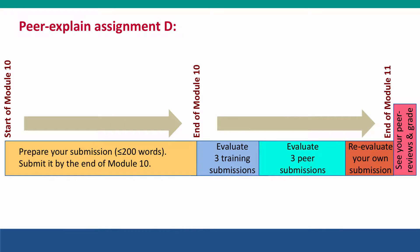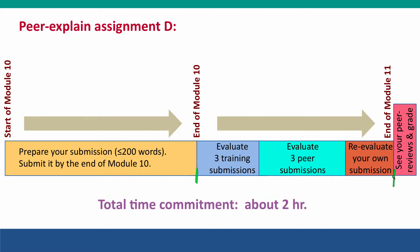At the same time, you'll be doing the last of our Pure Explain assignments, Assignment D. As before, you're to write a 200-word explanation of a genetics question, couched in language that ordinary people can understand. You'll need to submit it by the end of Module 10, and then you'll enter into the Training and Evaluation phase, where you'll practice evaluating other submissions before evaluating ones submitted by your peers. That'll be finished at the end of Module 11. All in all, it shouldn't take you much more than two hours to do this assignment.